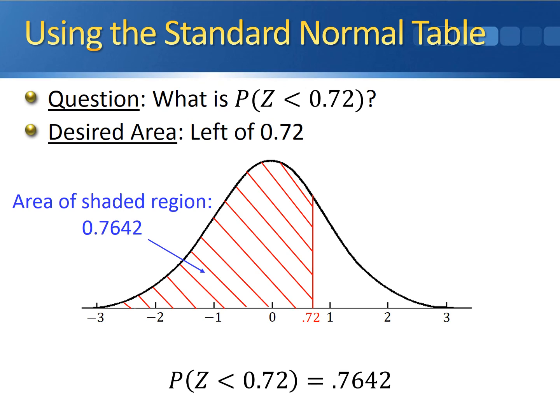This is the most generic and simplest case of calculating probabilities using the standard normal table. We'll take a look at a couple of more complicated cases in class, but this should give you a general idea of how to use the standard normal distribution table.